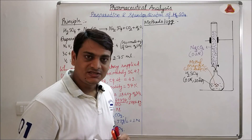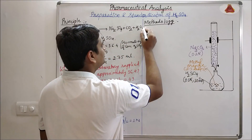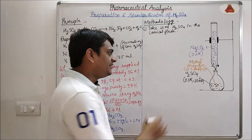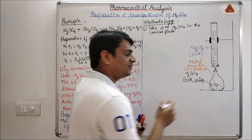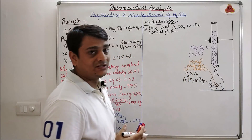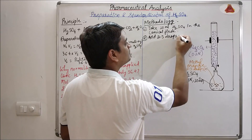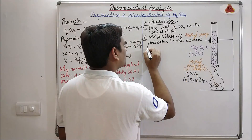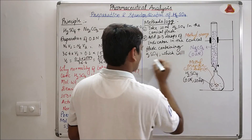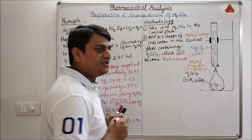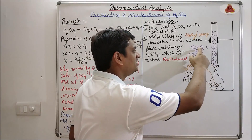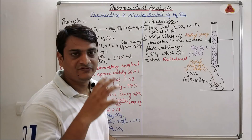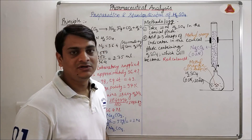The first step of the methodology: take 10 ml of H2SO4 in the conical flask. In the second step, add 2 to 3 drops of methyl orange indicator — due to the presence of acid it will become red in color. In the third step, titrate this solution using standard Na2CO3. At the end point we will get a light yellow or light orange color, and we will note down that reading in the observation table.